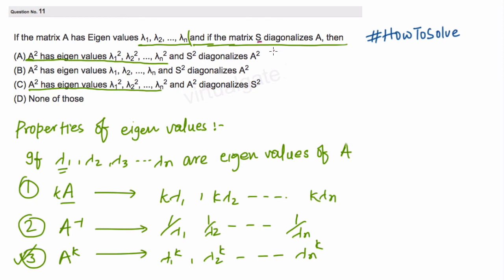Now, let us understand what is meant by diagonalization. We have been given that matrix S diagonalizes A. This means S is an invertible matrix, and when we multiply S⁻¹ with A and S again, we get a matrix D which is a diagonal matrix. We say that S is diagonalizing A.